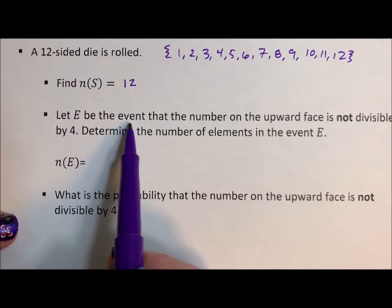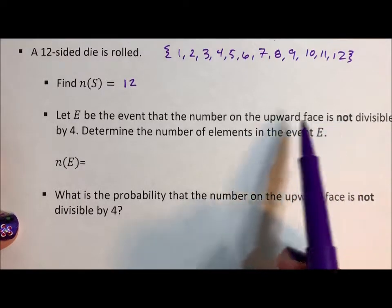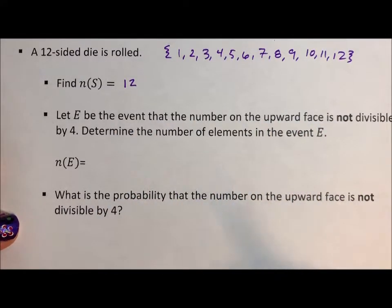Okay, let E be the event that the number on the upward face is not divisible by 4. Determine the number of elements.